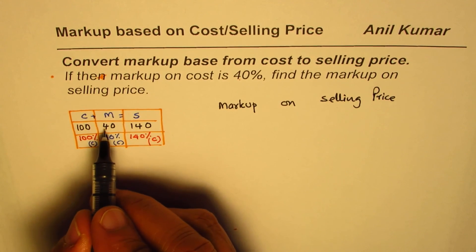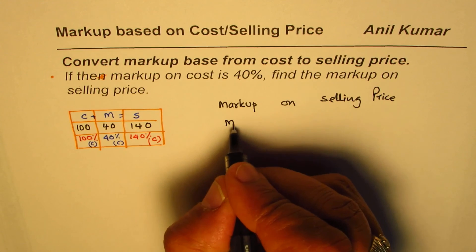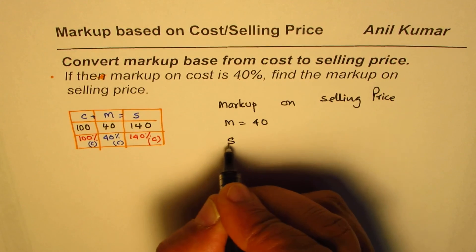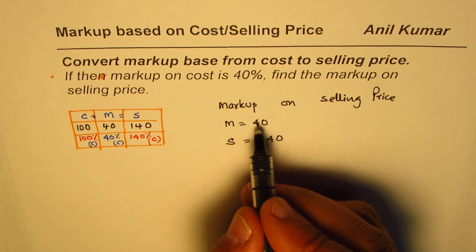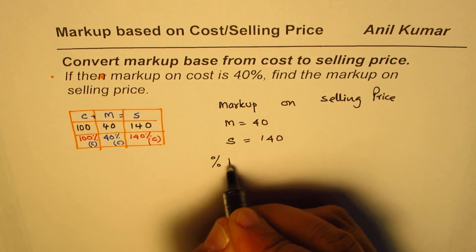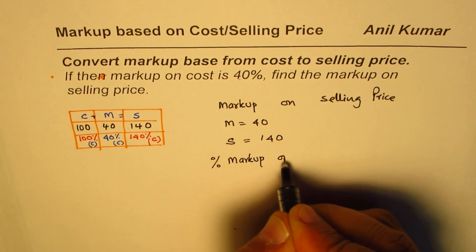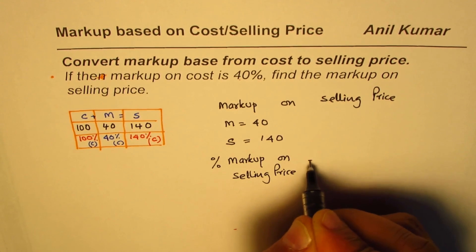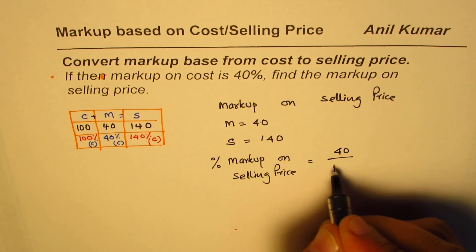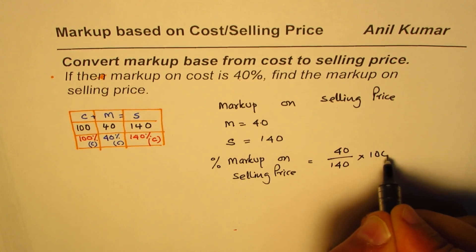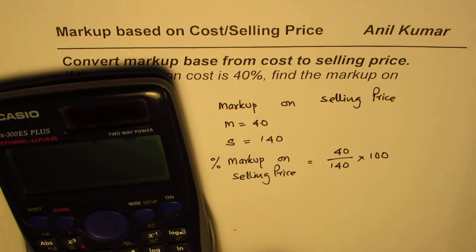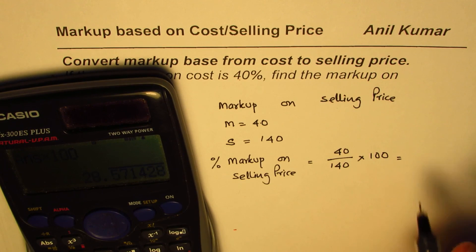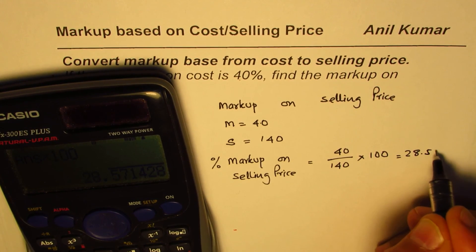Looking at the table, markup is 40 and selling price is 140. So percent markup on selling price equals 40 divided by 140 times 100. That equals 28.57%.